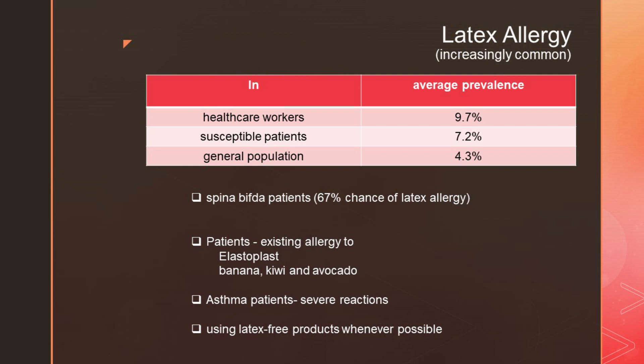The prevalence of latex allergy is 9.7% in healthcare workers, 7.2% in susceptible patients, and 4.3% in the general patient population. Studies show patients with spina bifida have a 67% chance of latex allergy. Patients reporting existing allergy to elastoplast, banana, kiwi, or avocado are more prone to latex allergy. Asthmatic patients can also have severe reactions to latex.